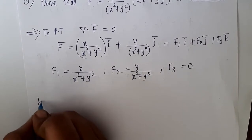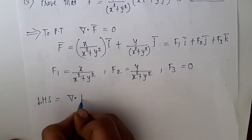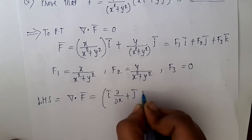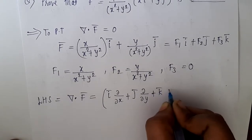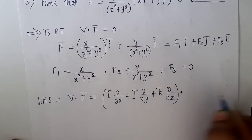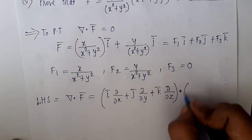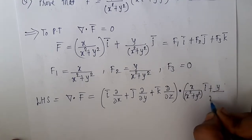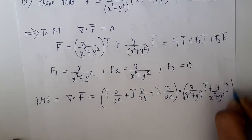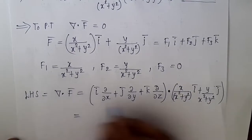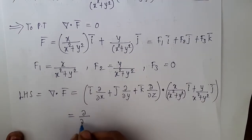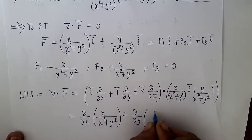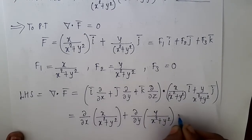Now we consider the LHS which is del dot f. Del dot f equals (i·del/dx + j·del/dy + k·del/dz) dot f, where f equals [x/(x²+y²)]i + [y/(x²+y²)]j. Taking dot products: it equals del/dx of [x/(x²+y²)] plus del/dy of [y/(x²+y²)] plus del/dz of 0. To differentiate x/(x²+y²) with respect to x, we use the quotient rule.